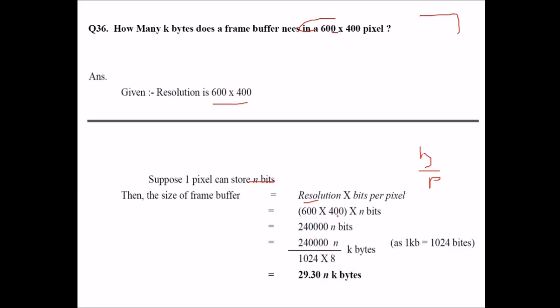So 600 x 400 x n bits. We multiply this n bits and we know that 1 kilobyte is 1024 bytes. So what we do, we divide it by 1024 and 8. This is why - because this answer was in bits. So we convert it into bytes by dividing by 8 and then convert this bytes into kilobytes by dividing it by 1024.